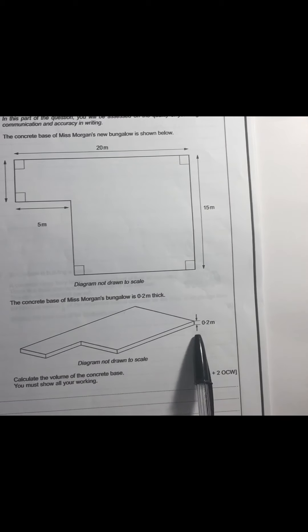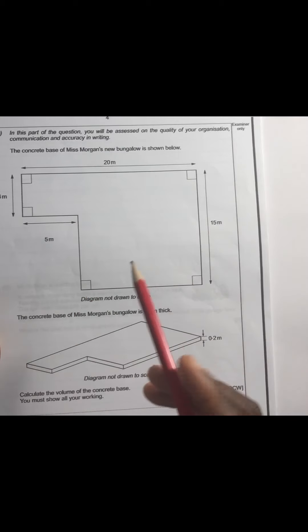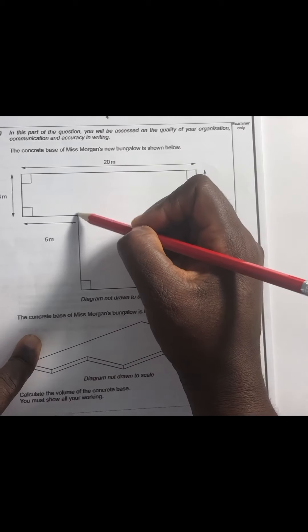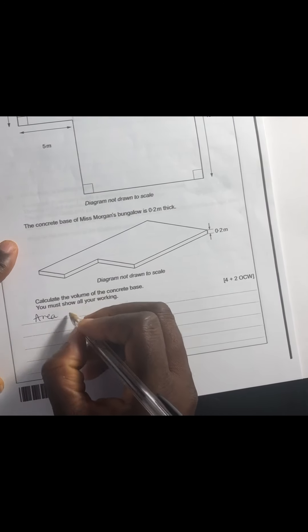Taking the thickness of this bungalow base to be 0.2 meters as given, all we have to do now is calculate the area of the base and then multiply it by the thickness. This is a composite shape, meaning it's made up of more than one basic shape. I'm going to split it into two shapes — shape A and shape B. Shape A is 4 by 5 meters.